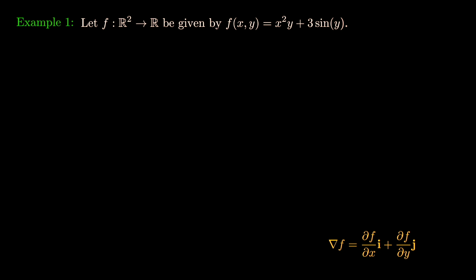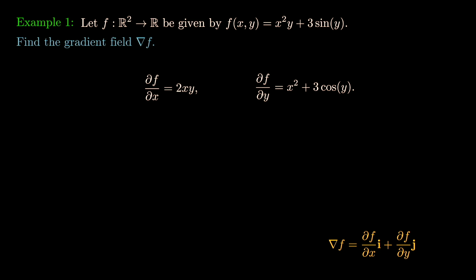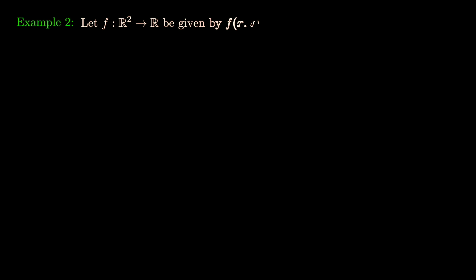Let's compute an example. Let f(x,y) = x²y + 3 sin y. The x partial derivative (keeping y constant) gives 2xy, and the y partial derivative (keeping x constant) gives x² + 3 cos y. So grad f = 2xy î + (x² + 3 cos y) ĵ.